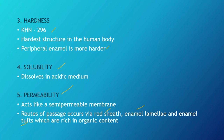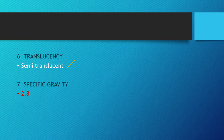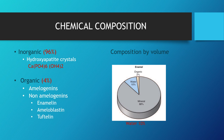Permeability: enamel acts like a semi-permeable membrane and the routes of passage occur via rod sheath, enamel lamellae, and enamel tufts — these are rich in organic content. Translucency: it is semi-translucent, and the specific gravity is 2.8. Coming to chemical composition — it has the highest inorganic content, which is 96%, having hydroxyapatite crystals with the formula Ca₁₀(PO₄)₆(OH)₂. The organic content is 4%, which includes amelogenins and non-amelogenins such as enamelin, ameloblastin, and tuftelin. By volume, mineral content is 88%, organic content is 2%, and water is 10%.